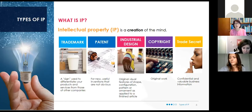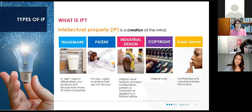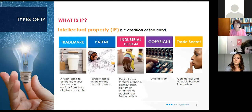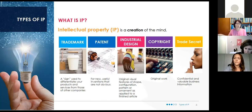The five tools are: trademarks, patents, industrial designs — which often get forgotten but can be really powerful — copyright, which many people have heard of, and trade secrets, which some people may not be as familiar with. My goal is to walk through each of these tools and do an overview: what does each tool do, when do you use it, and what does each help you protect?